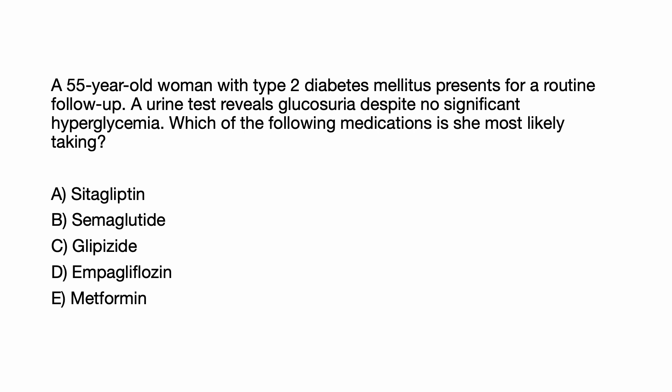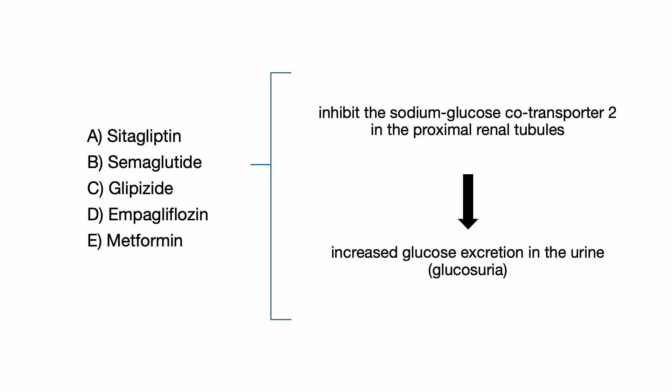Here's a 55-year-old female with type 2 diabetes who presents to your clinic for a follow-up. A urine test reveals glucosuria despite no significant hyperglycemia. Which of the following medications is she most likely taking: sitagliptin, semaglutide, glipizide, empagliflozin, or metformin? The correct answer is D, empagliflozin. SGLT2 inhibitors such as empagliflozin work by inhibiting the sodium-glucose cotransporter 2 in the proximal renal tubules, leading to increased glucose excretion in the urine — glucosuria — and helping to lower blood glucose levels. This effect is specific to SGLT2 inhibitors and can aid in glycemic control, particularly in patients with type 2 diabetes.